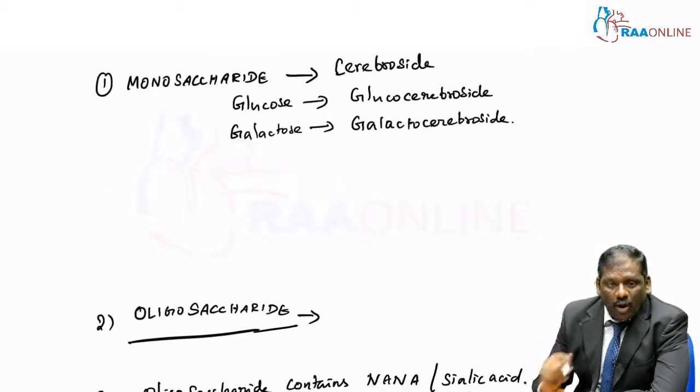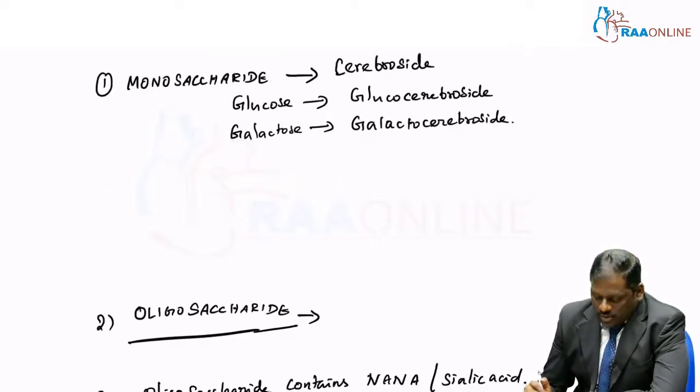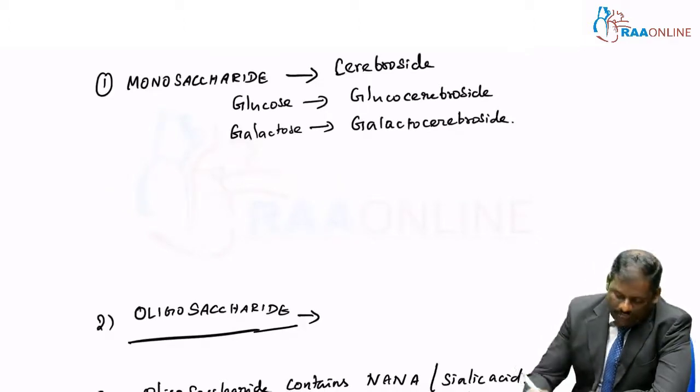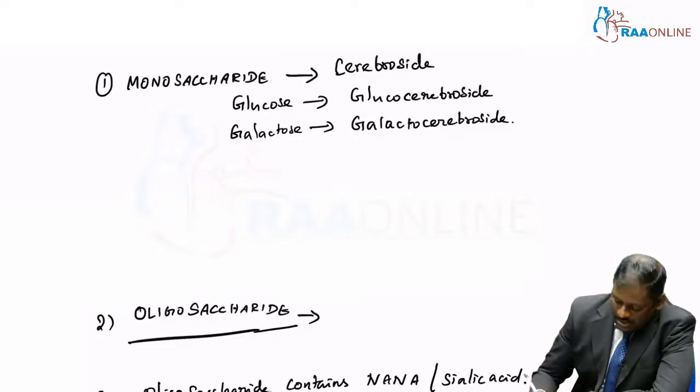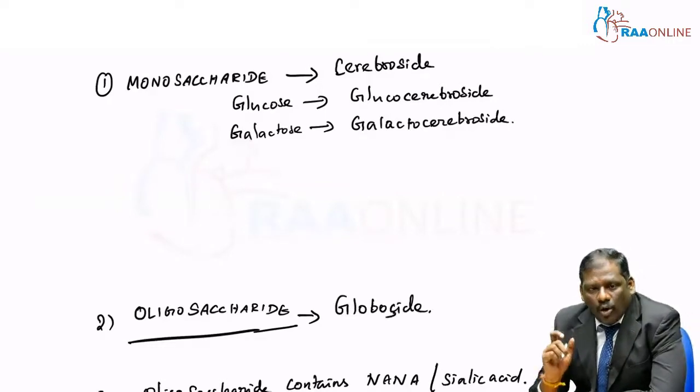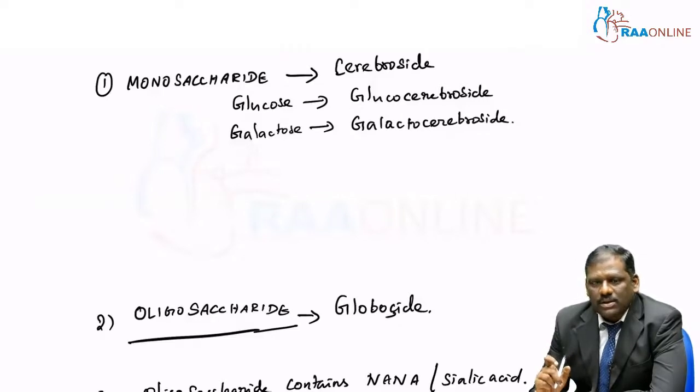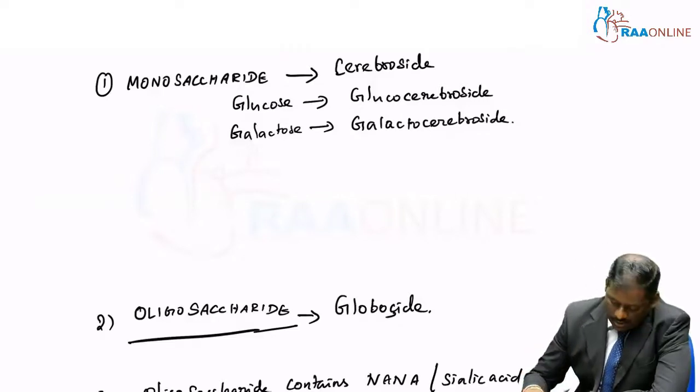As I said before, now we have got oligosaccharides. If that additional group happens to be oligosaccharide, then this is called as a globosaccharide.